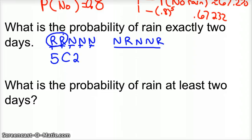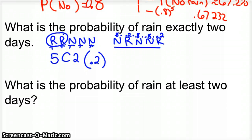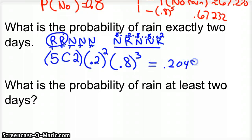No matter how we arrange it, the probability for rain is 0.2 and no rain is 0.8. When you're multiplying these, the commutative property works no matter what the order. So all ten situations have the exact same probability: 0.2 to the second power — because there are two days of rain — times 0.8 to the third power — because there are three days without rain. Plugging that in: five choose two is ten, times 0.2 squared, times 0.8 cubed, gives 0.2048 — about a 20.5% chance of exactly two days of rain sometime in that week.